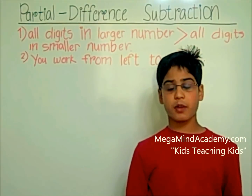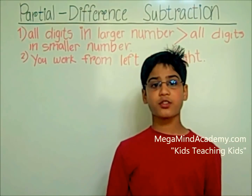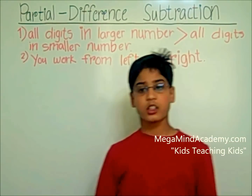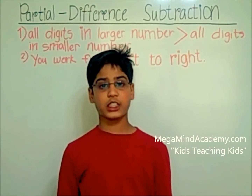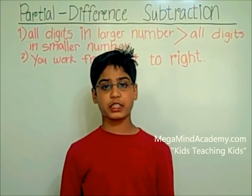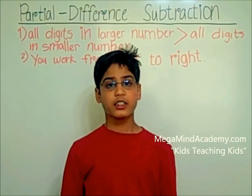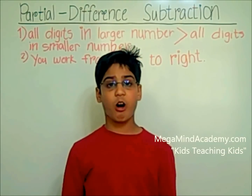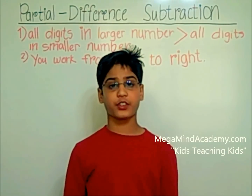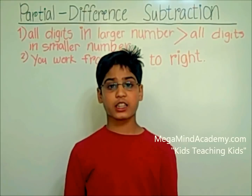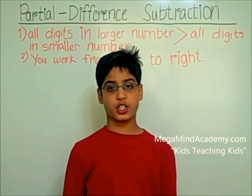In this method, you first find all the partial differences for each of the place values. Then you add all the partial differences to get the final answer.